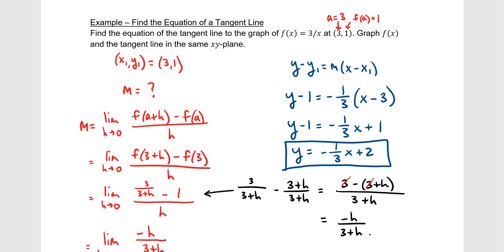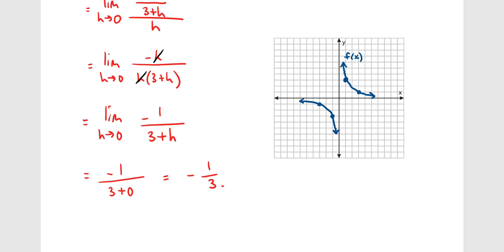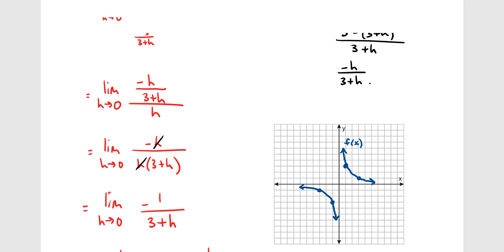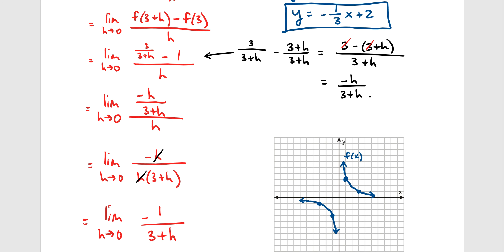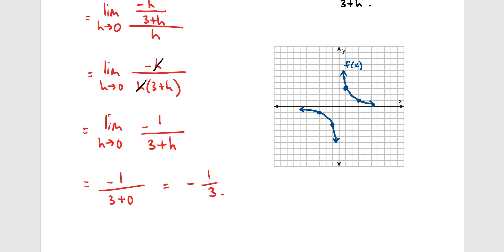Graphing the function f(x) = 3/x and the tangent line y = −(1/3)x + 2 — with y-intercept 2 and slope −1/3 — confirms the line passes through (3, 1) and looks accurate as the tangent line at that point.